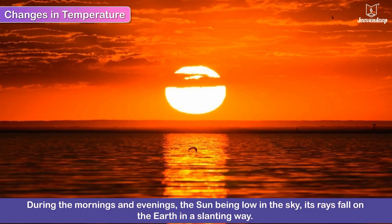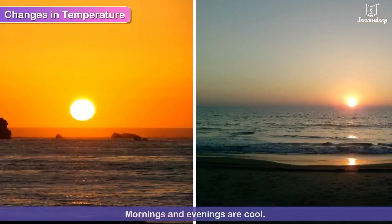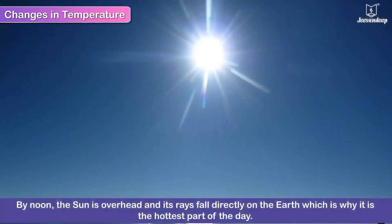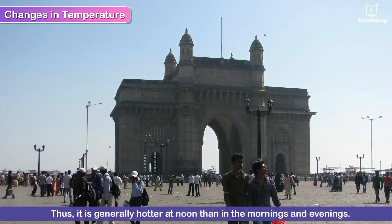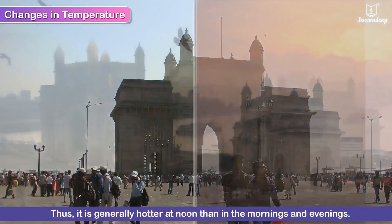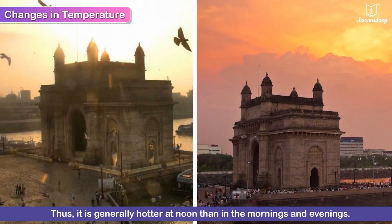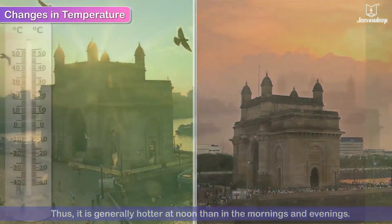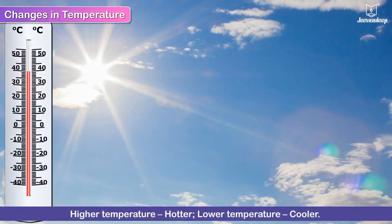Changes in temperature. During the mornings and evenings, the Sun being low in the sky, its rays fall on the earth in a slanting way, so the mornings and evenings are cool. By noon, the Sun is overhead and its rays fall directly on the earth, which is why it is the hottest part of the day.